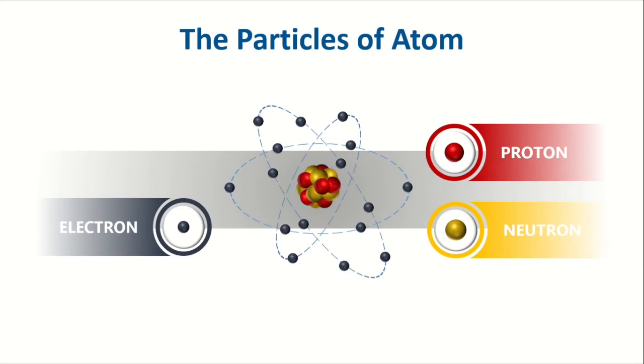Protons and neutrons are located at the center of the atom called nucleus, and electrons are located outside the nucleus revolving around it in specific orbitals.